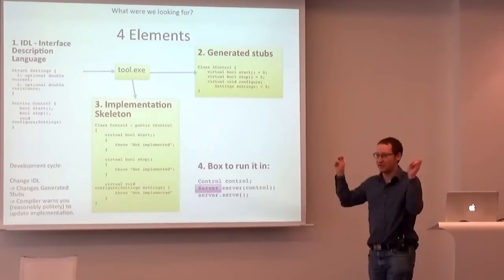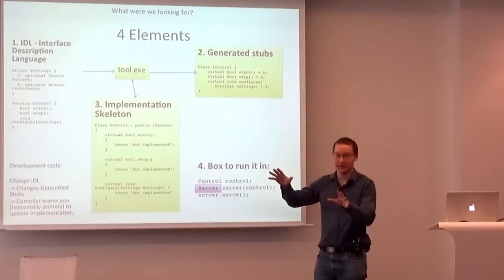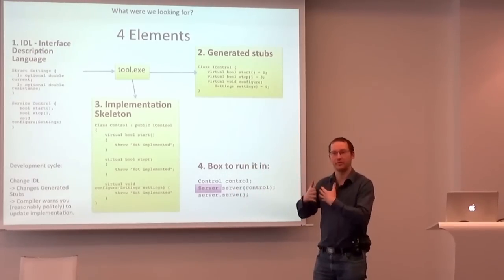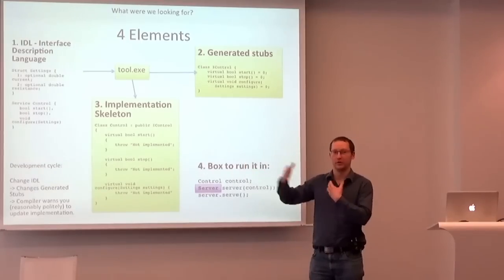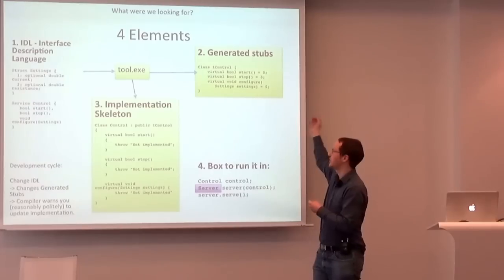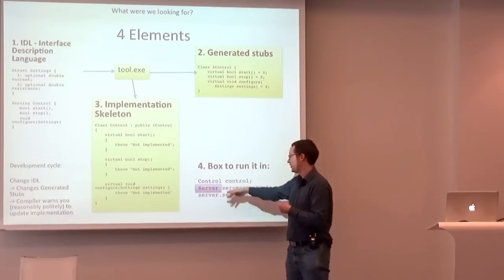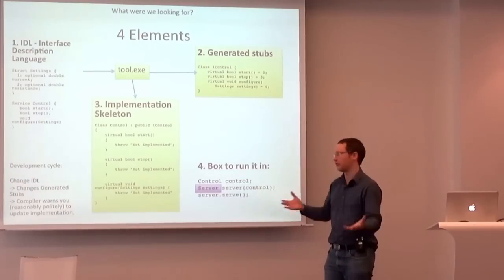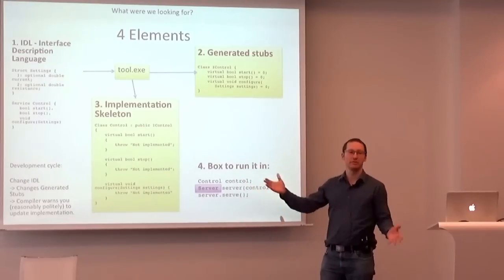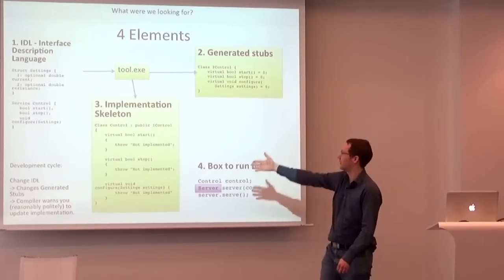The four elements of an RPC framework, as we understand it: you have an interface description language that lets you type in a generic idea of your contract — the interface between your clients and your server. There's a tool that generates stubs and gives you an implementation skeleton which you can then edit. And the nice thing is that if you change your contract, the compiler tells you about it because your interface changes and your implementation breaks.